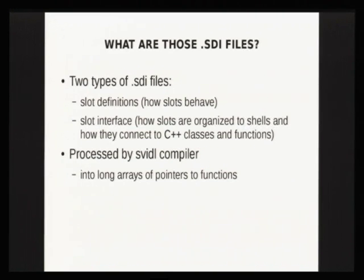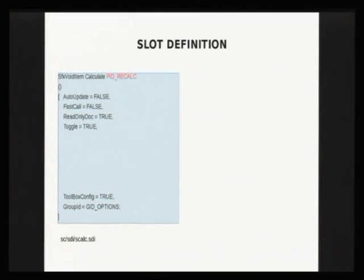There are two types of SDI files. One contains slot definitions — a description of how a particular slot behaves. This is how an average slot definition looks like. All those entries define how the slot behaves: if it can be assigned a keyboard shortcut, if it can be used in a menu entry, if it can be used in a toolbox. For example, if you have a toolbar button and want to make it a binary toggle, you set the toggle attribute to true. Or if you want to expose a slot in a toolbar button and make it accessible, you set the toolbox config to true.